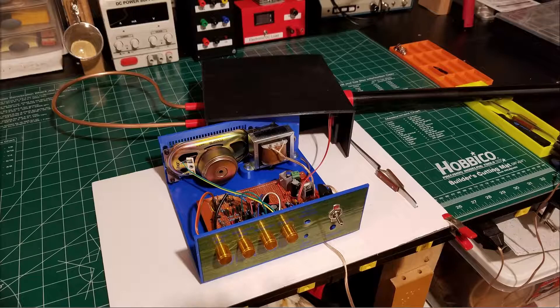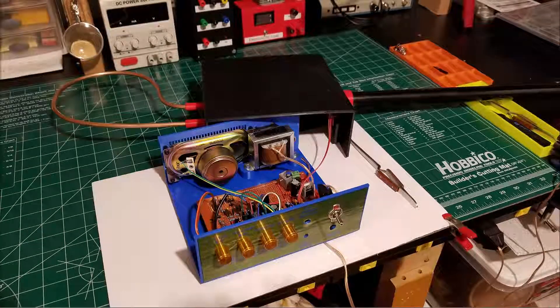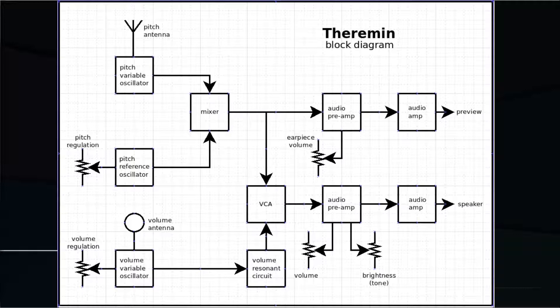To provide some dynamics to the theremin sound, we need to be able to change the sound volume in real time, especially to silence the theremin between one note and the next when the melody requires it. As we have seen already, this is done through another oscillator called the Volume Variable Oscillator, which is used to create a variable DC voltage that controls a voltage controlled amplifier, or VCA.